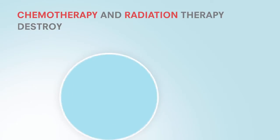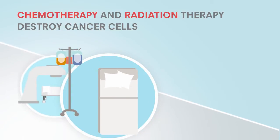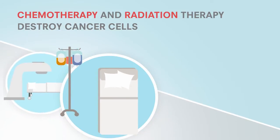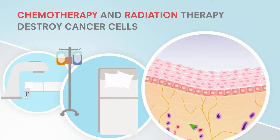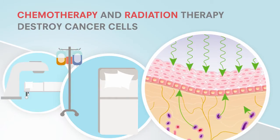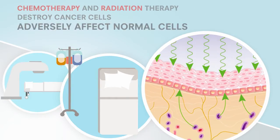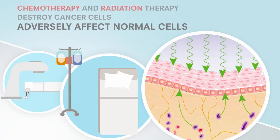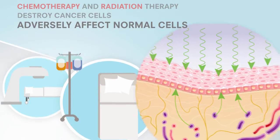Chemotherapy and radiation therapy are commonly used in the treatment of cancer because they prevent cancer cells from dividing. However, these treatments can also adversely affect normal cells in the body, including rapidly dividing cells lining the mouth and throat, known as the oral mucosa.